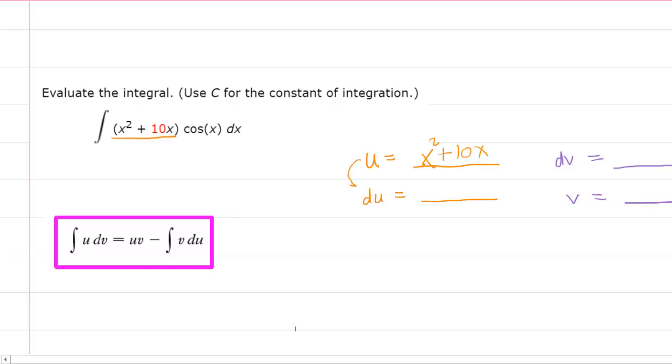Now, when you go from u to du, you're going to want to do a derivative. We've already computed that derivative. It was 2x + 10, and then dx.